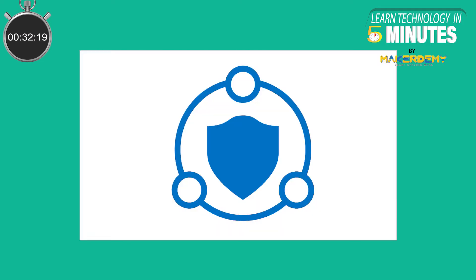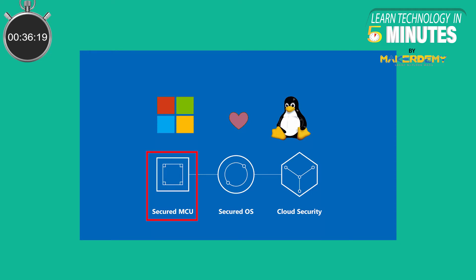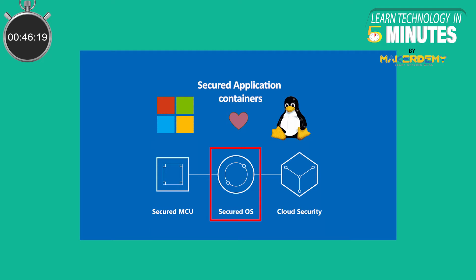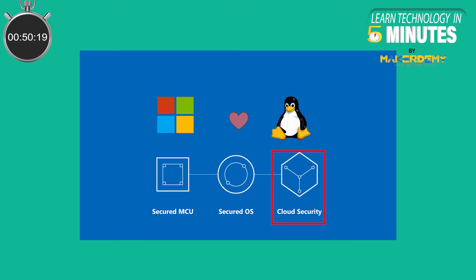In Azure Sphere, three components are working as one. First is a secured microcontroller unit that comprises built-in security and built-in connectivity. Next is a secured operating system that is Linux-based, having secured application containers and cloud services inbuilt. The last component is cloud security, which handles software updates, detects emerging threats, and provides authentication.